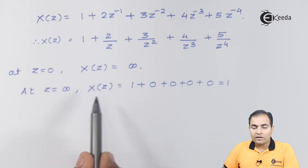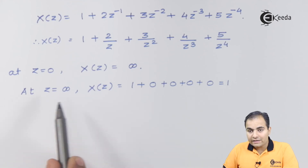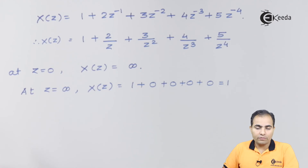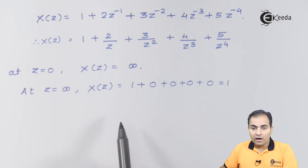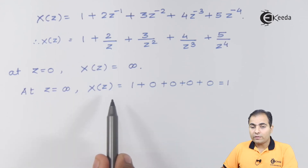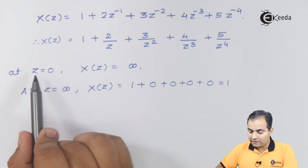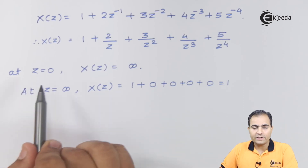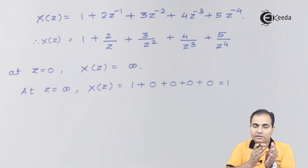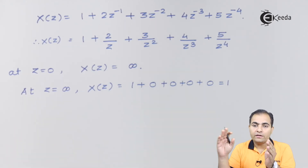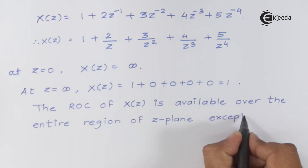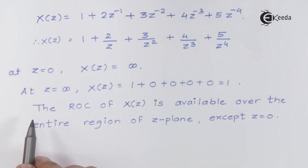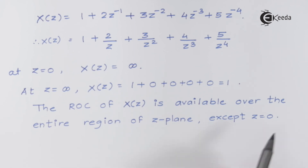The ROC of the given function X(z) is available over the entire region of the z-plane, except at z=0. This means: just ignore z=0; the rest of the region available on the z-plane up to infinity will give a finite result. The ROC statement is: the ROC of X(z) is the entire z-plane except z=0.